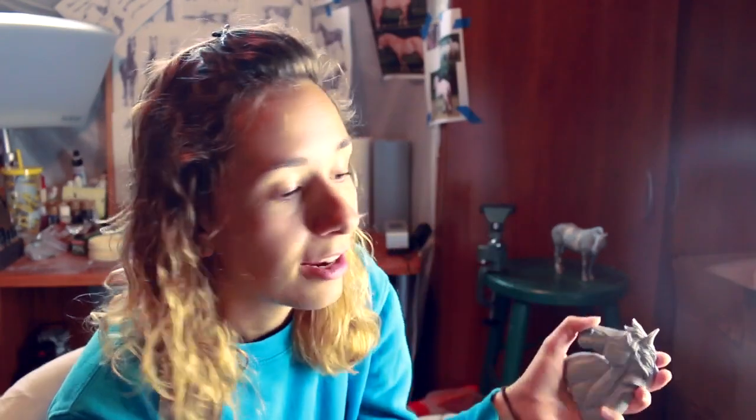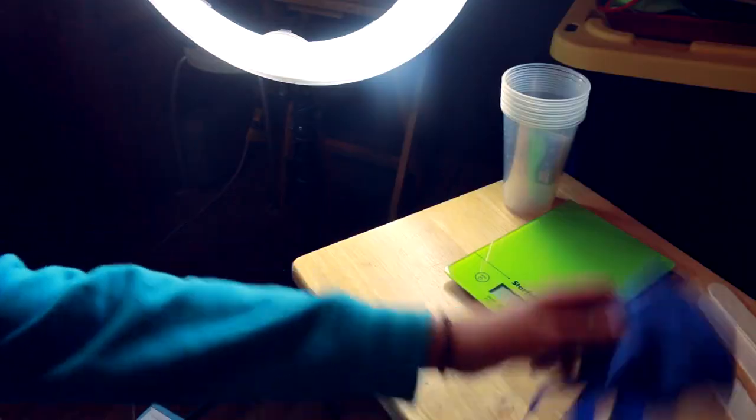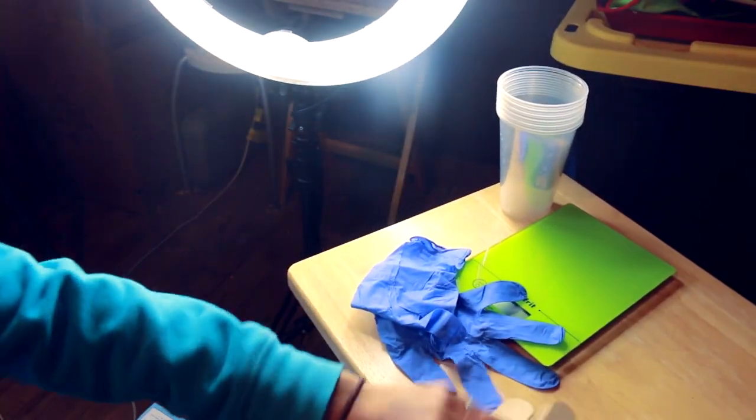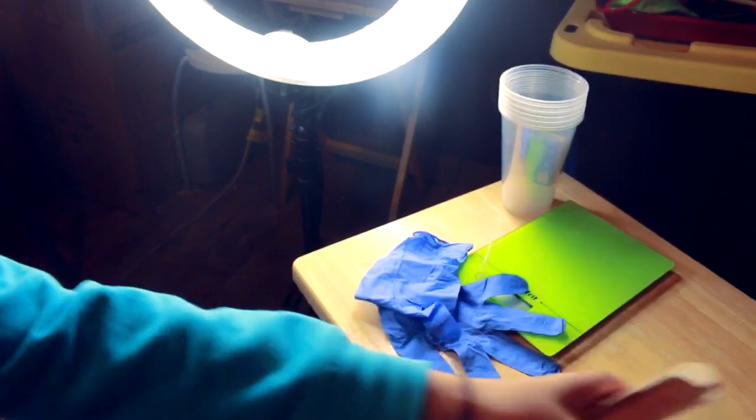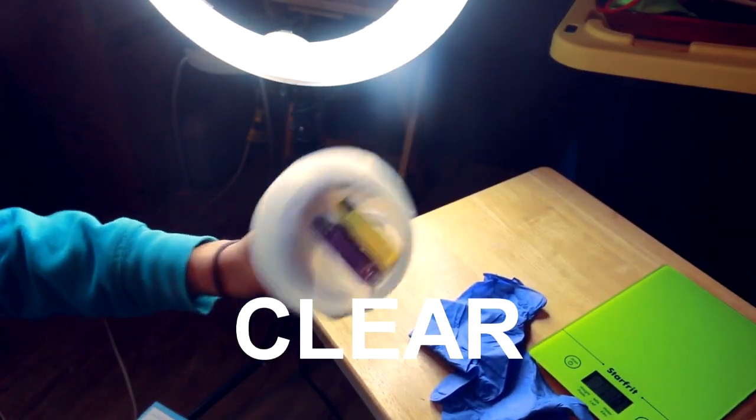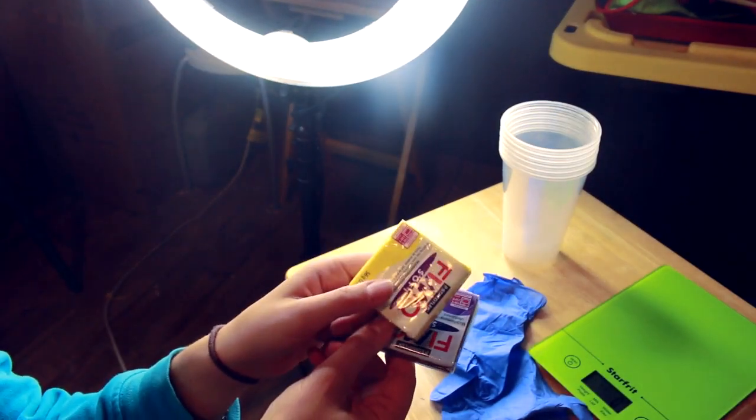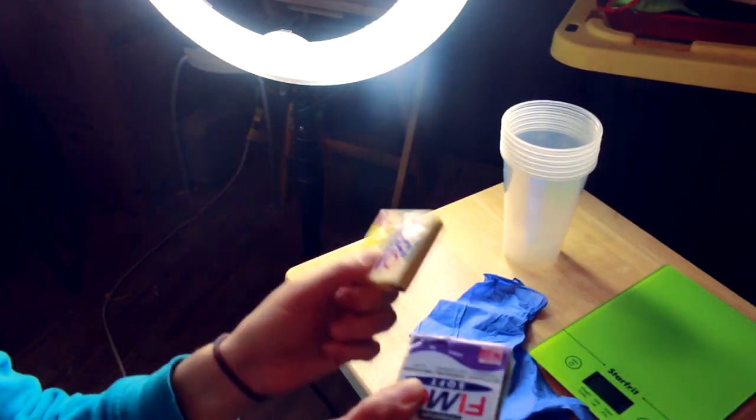So we're gonna try that. I don't know how this is gonna go. I have rubber gloves so I don't get this in my skin. I have mixing sticks because you need to mix the thing. I have plastic cups to put it in. I have some clay because I was told that you seal the edge of the mold with clay.